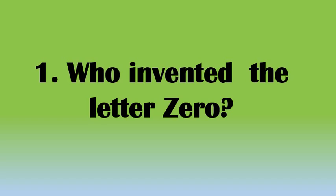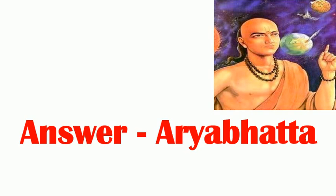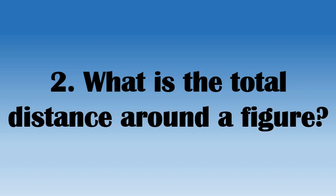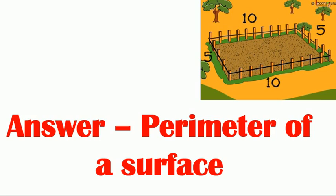Number 1: Who invented the number 0? Number 2: What is the total distance around a figure? Answer: Perimeter of a surface.